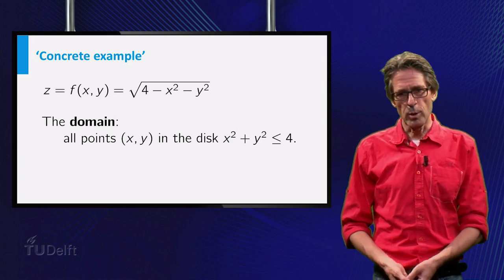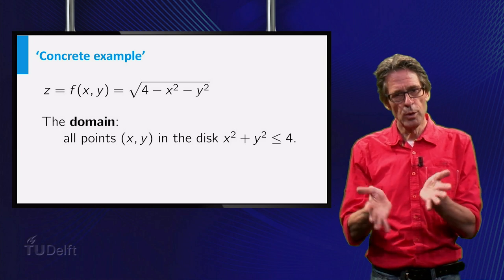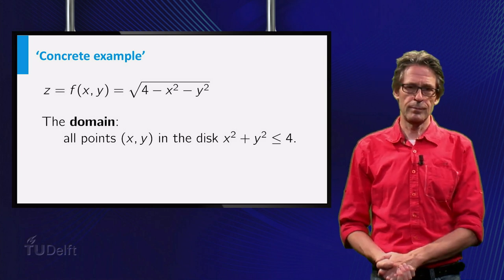And this is the case if x squared plus y squared is less than or equal to 4. This means that the point lies in the circular disk of radius 2 around the origin.